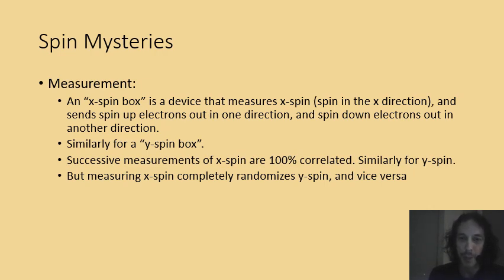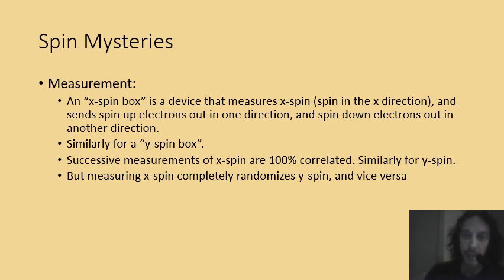However, if you measure the spin in one direction and then measure the spin in an orthogonal direction, there's no correlation. Also, measuring the spin in the x direction and then measuring the spin in the y direction completely disrupts the x-spin. So if after measuring the y-spin you then measure the x-spin again, it's been randomized — there's a 50% chance of x-spin up and 50% chance of x-spin down. Y-spin measurements disrupt x-spin and x-spin measurements also completely disrupt y-spin.